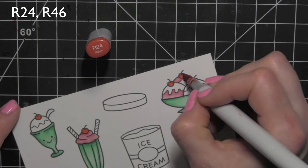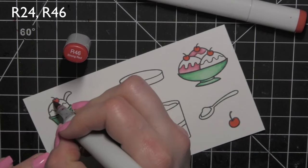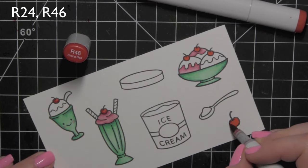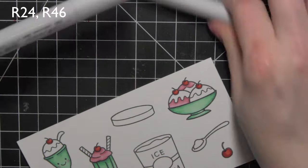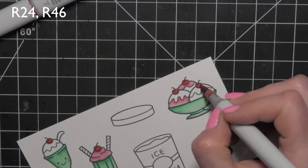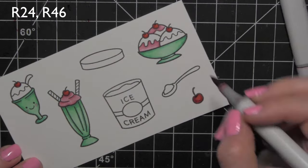For all the cherries I'm using R24 and R46. Not a ton of blending needs to be done for those teeny tiny cherries, they're pretty small and they blend almost on their own.